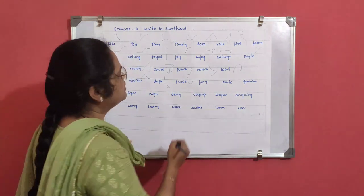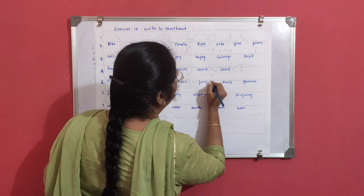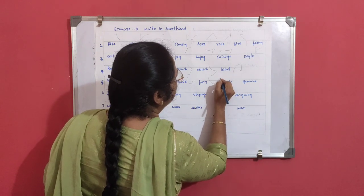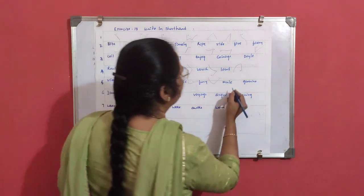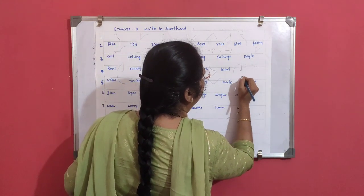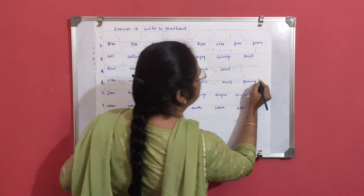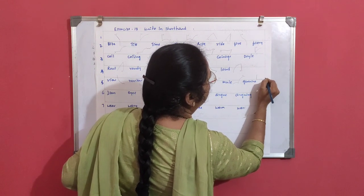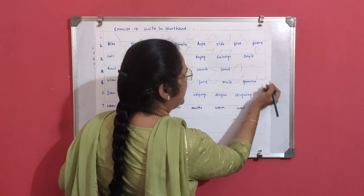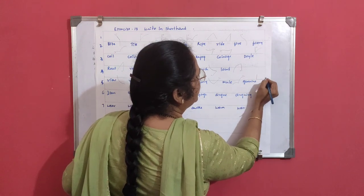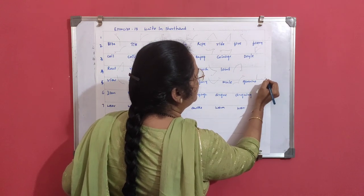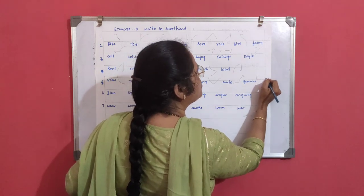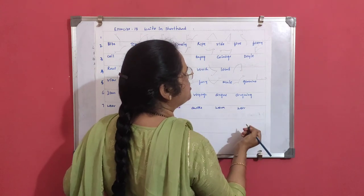Fury: F and R, U diphthong, E oval. Nun: U diphthong. Janun: J on the line, N and N. J, A oval, N, after N U diphthong, one more N after U, and there is an oval, so one tick is to be attached. Janun.